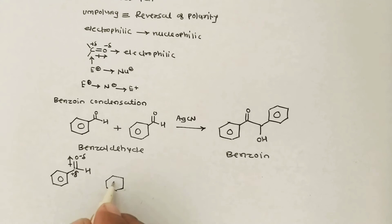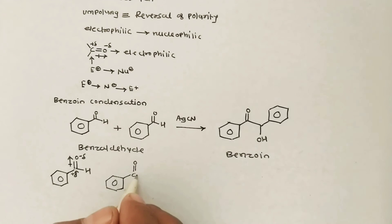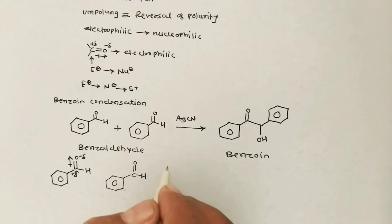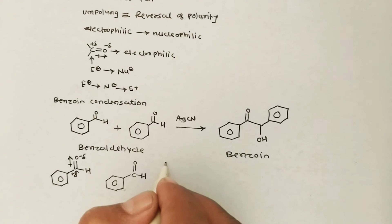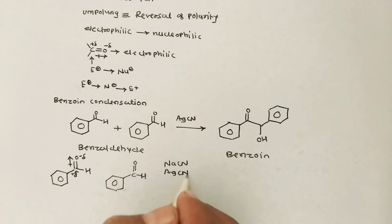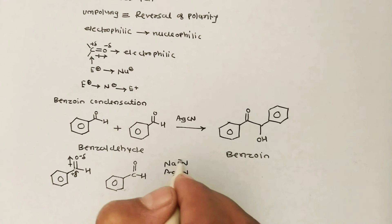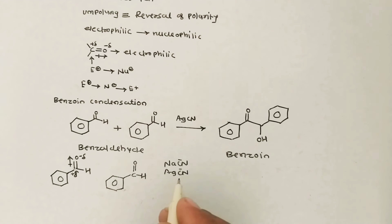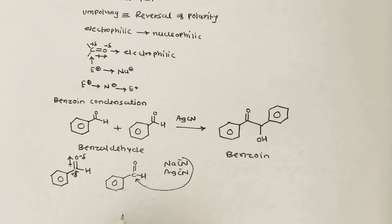If I write the structure — suppose this is benzaldehyde — in the presence of NaCN or AgCN, the cyanide ion is nucleophilic in nature. So this nucleophile attacks on the carbonyl carbon initially, to form a tetrahedral intermediate, that is, a cyanohydrin.